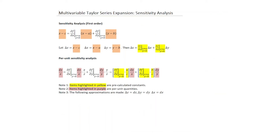Sensitivity analysis asks: if you are at a given point and perturb slightly in the X and Y directions, how does Z change? The differential is: ΔZ = ∂F/∂X|(A,B) · ΔX + ∂F/∂Y|(A,B) · ΔY. This is the calculation we call sensitivity analysis.